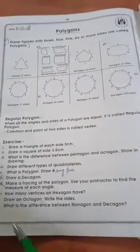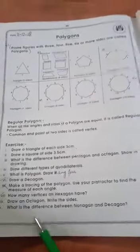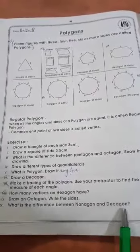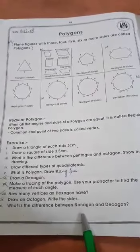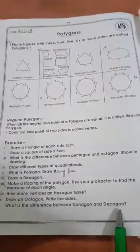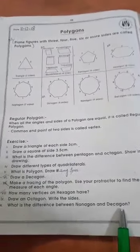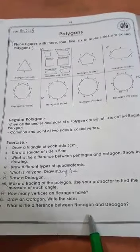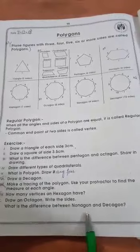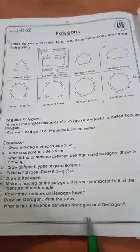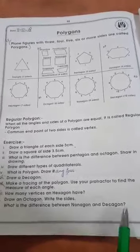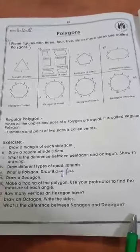Question number 10 is: what is the difference between a nonagon and a decagon? A nonagon is a nine-sided figure and a decagon is a ten-sided figure. A nonagon has nine sides whereas a decagon has ten sides.